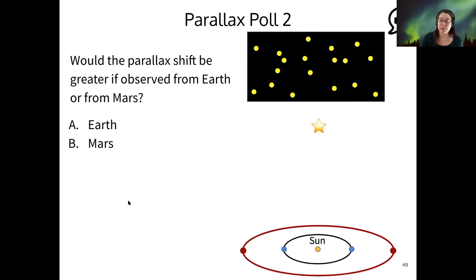Another question, let's suppose that we could change our viewing angles, which we can't do with our eyeballs because they're fixed on our head. But suppose you could observe your nearby star from Mars instead of from Earth. Which planet would observe the greater parallax shift for the same given star?